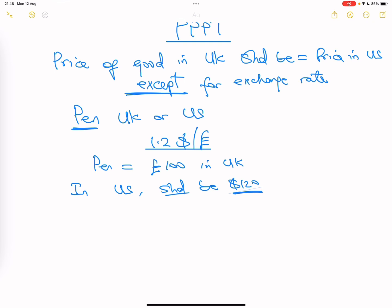Which means that if exchange rate in the UK, if an exchange rate is $1.2 for one pound, and a pen is costing 100 pounds in the UK, then in the US it should be costing $120 and no more. Because the only difference should just be the exchange rate. The purchasing power of the currency should be similar. And the reason why he's saying it is that if that is not the case, then there is inflation involved.